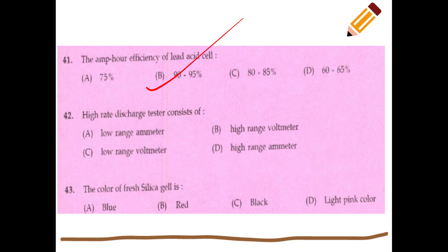A high-rate discharge tester consists of a low-range voltmeter. The colour of fresh silica gel is blue.